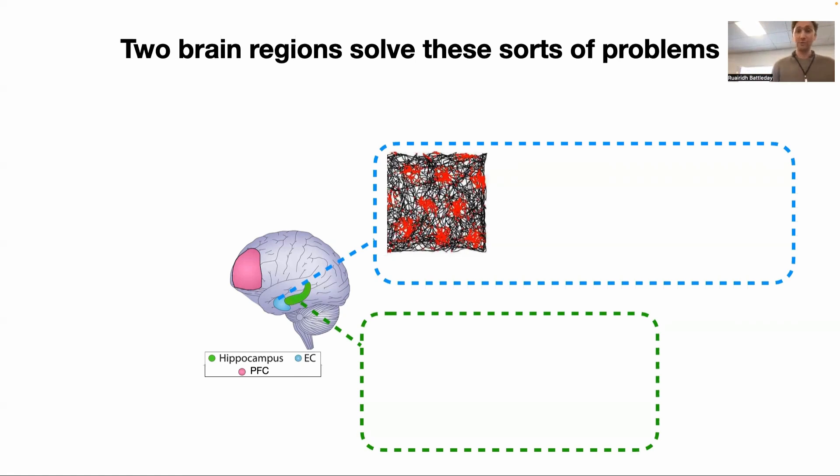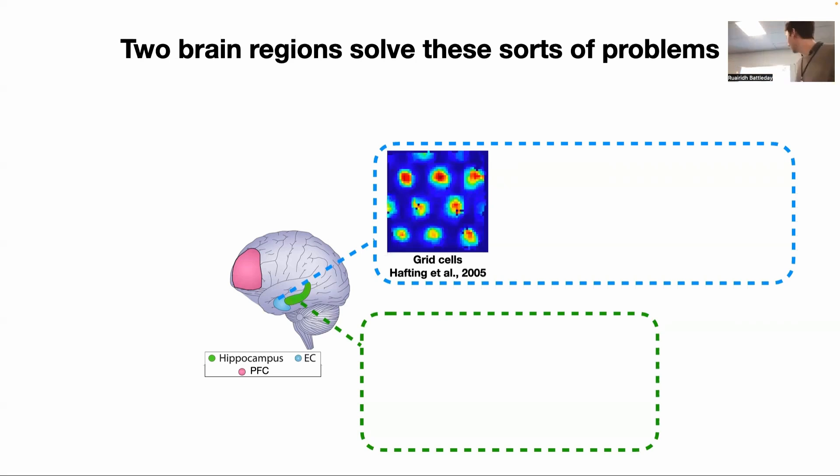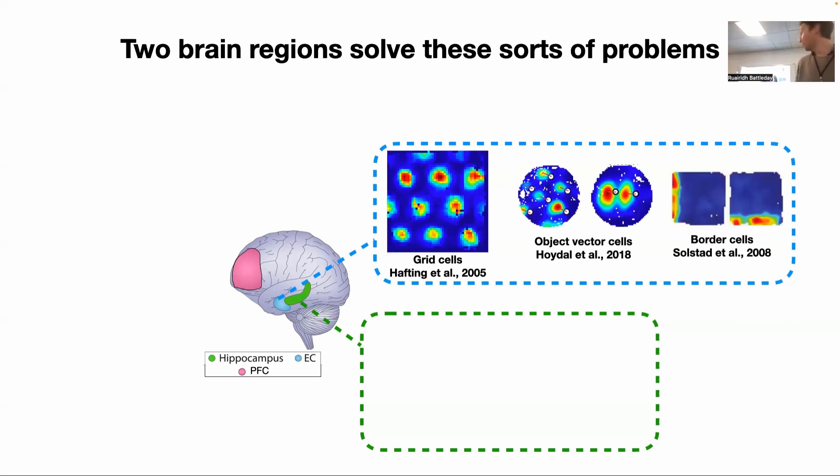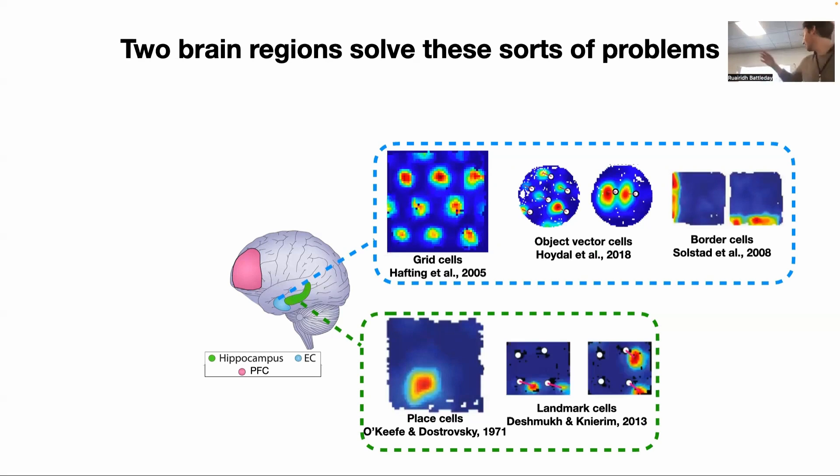Here's an example of a single cell where an animal has, this black trajectory shows an animal running around, and every dot is where the single cell has fired. This cell is called a grid cell, it won a Nobel Prize in 2012. There's lots of other cells that respond to space as well: object vector cells, border cells, place cells, landmark cells. So tons and tons of cells that are really involved in this problem of mapping space and allowing you to make those inferences.